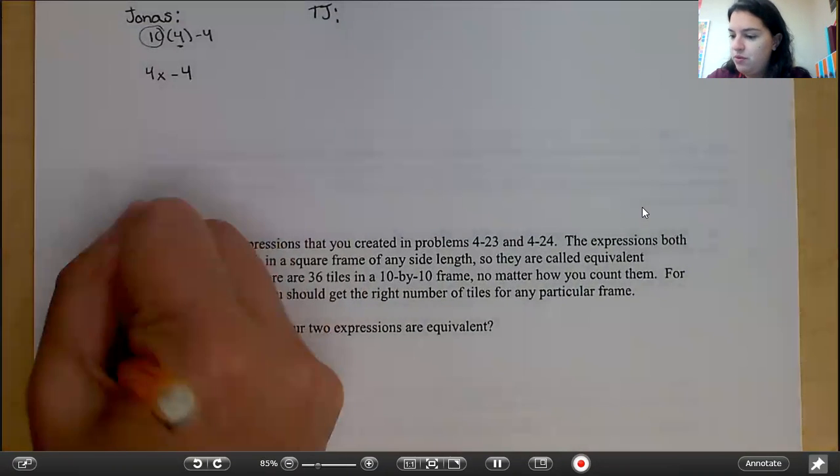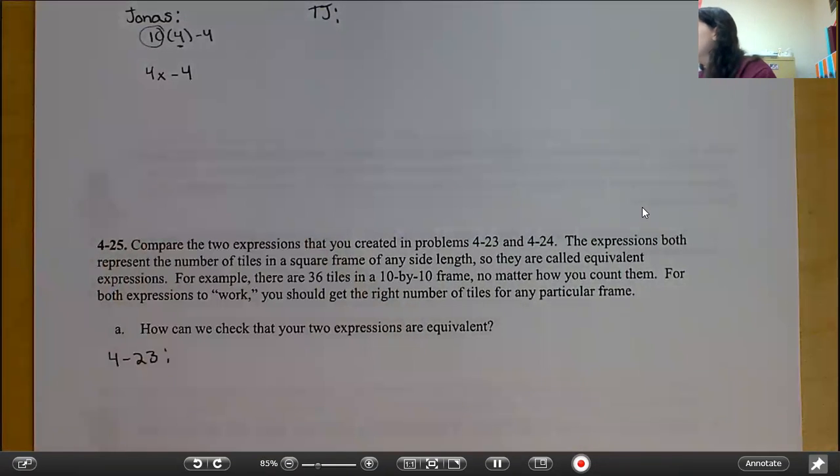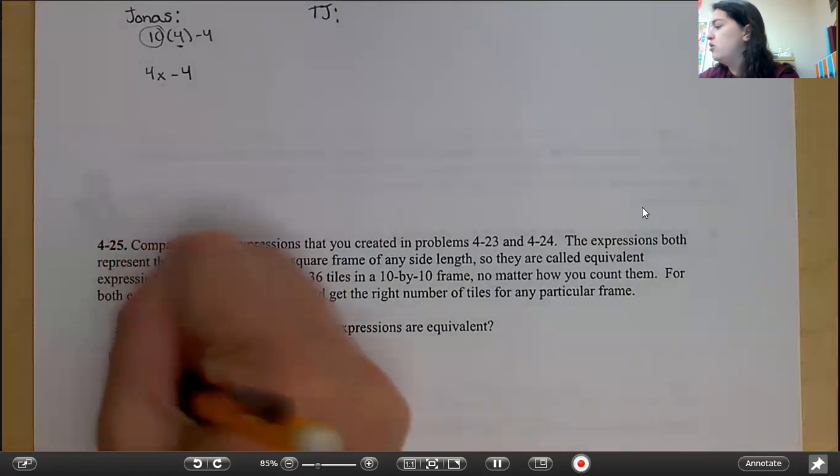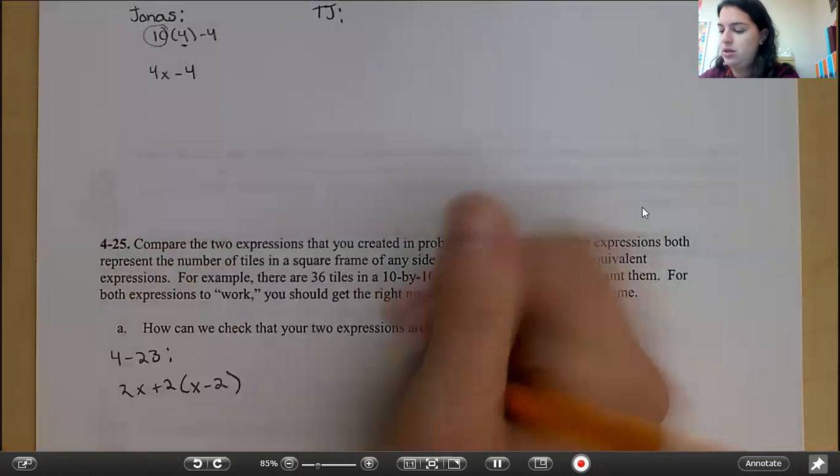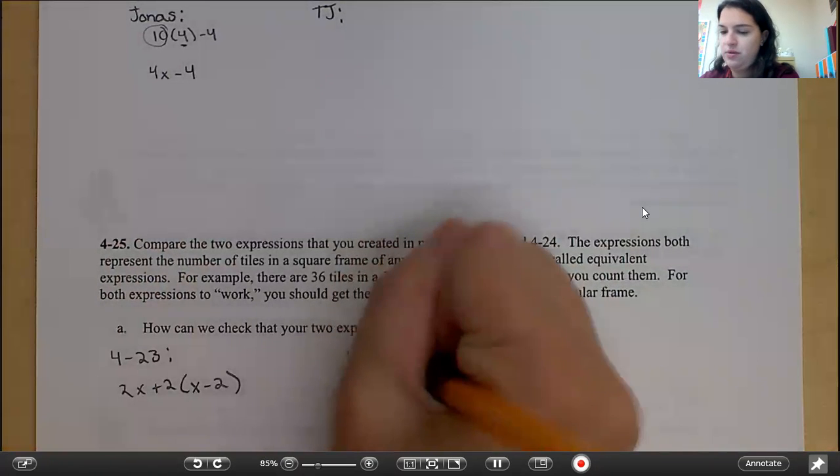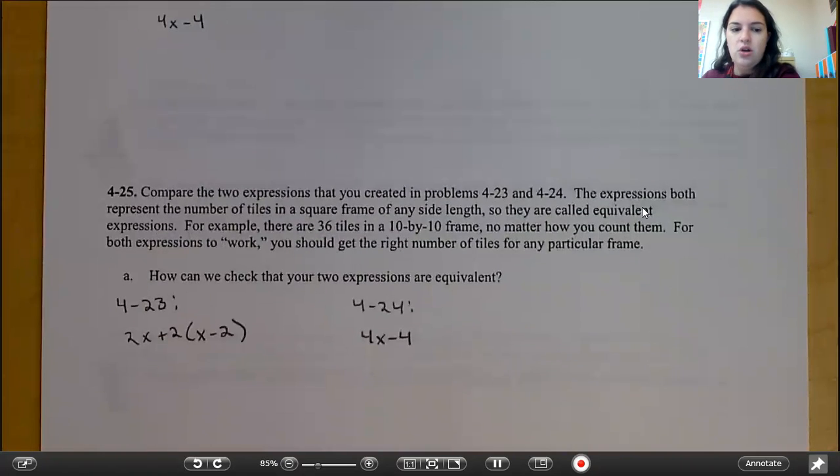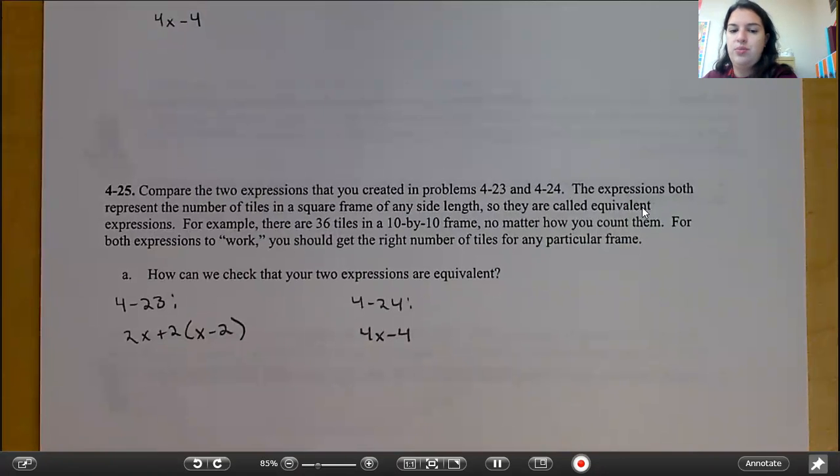How can we check that your two expressions are equivalent? So the expression from problem 423 is 2x plus 2 times quantity x minus 2. And your expression from 424 was 4x minus 4. So how can you check that these two expressions are equivalent? Go ahead and answer that.